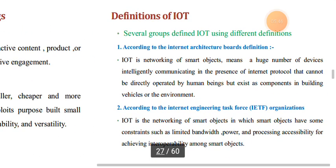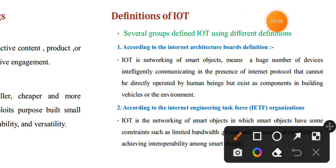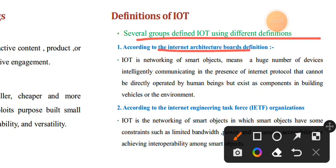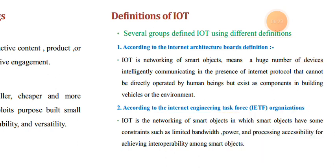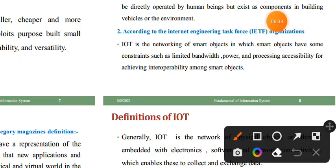The IoT definition comes from several groups. According to the Internet Architecture Board, IoT is a huge number of devices intelligently communicating over the internet — a network of smart objects that need a broad internet connection. The Internet Engineering Task Force (IETF) also defines IoT as the networking of smart objects.